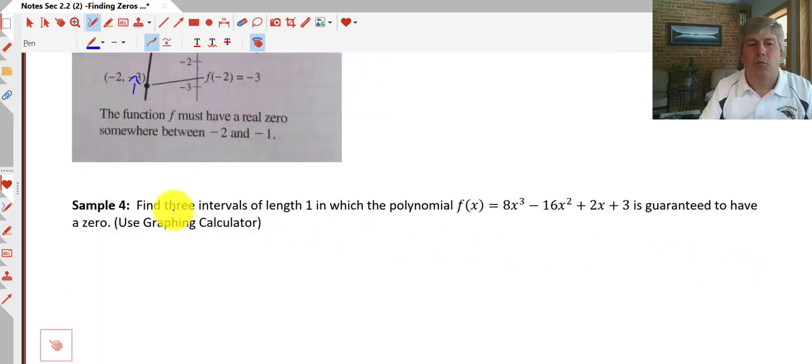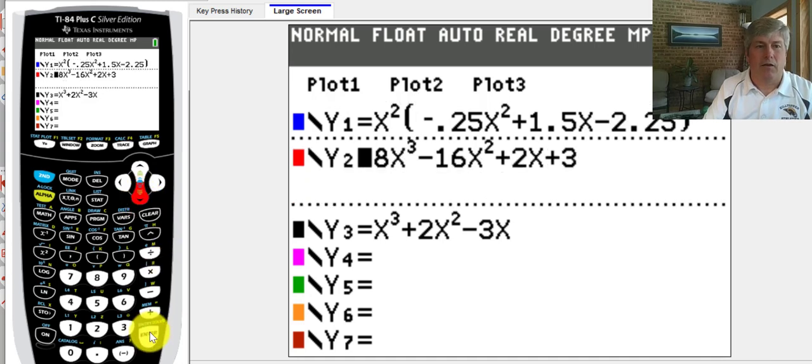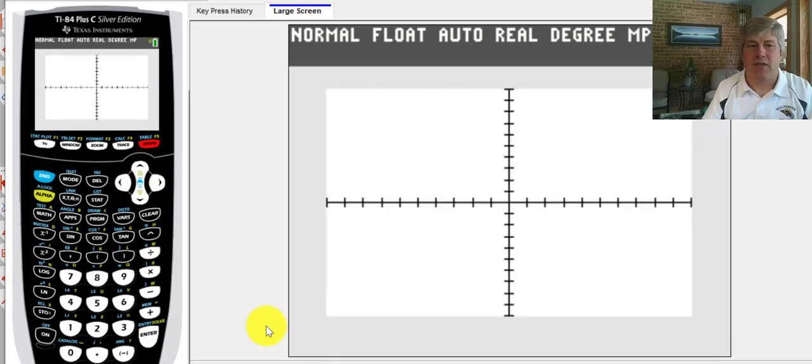So you may be asked to do problems such as this. Find three intervals of length one in which the polynomial is guaranteed to have a zero. We don't expect you to do this off the top of your head. So we'll input this into the graphing calculator. And let's take a look and see what we get. I'll deselect the first equation. I'll go back. I'll select the second equation. And we'll go ahead and graph that.